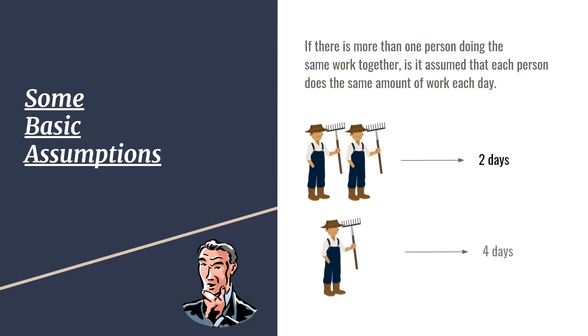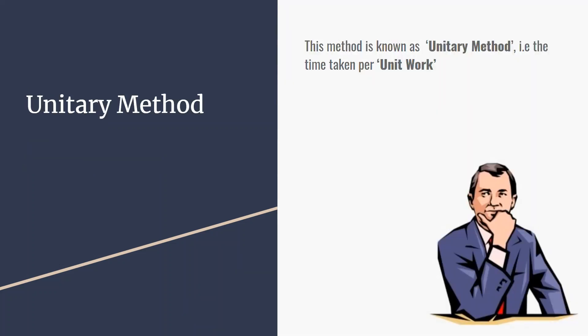This method is also known as the unitary method — that is, the time taken per unit of work or the number of persons required to complete unit work. Let us move to the fundamental on variation.